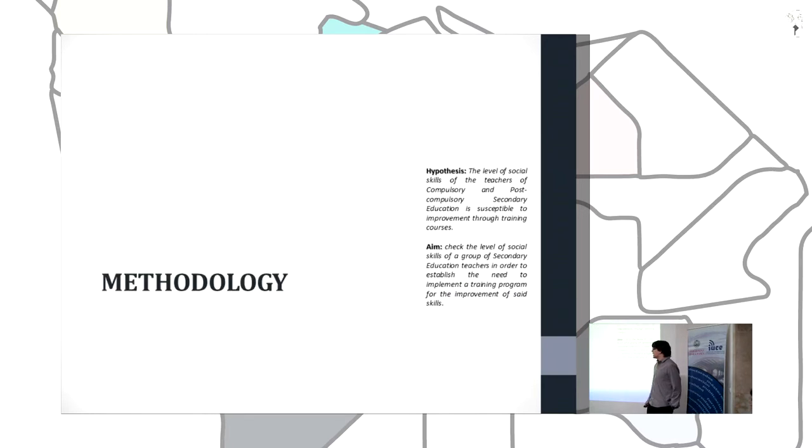The methodology that we are going to follow in the study has as its hypothesis that the level of social skills of the teachers of compulsory and post-compulsory secondary education is successful to improve through training courses. The aim of the research is to check the level of social skills of a group of secondary education teachers in order to establish the need to implement a training program for the improvement of these skills.